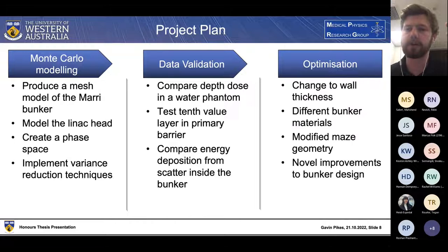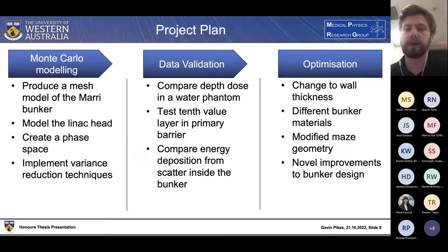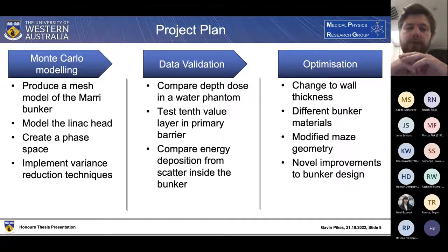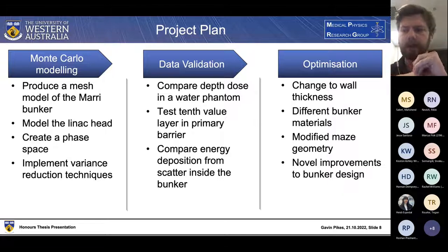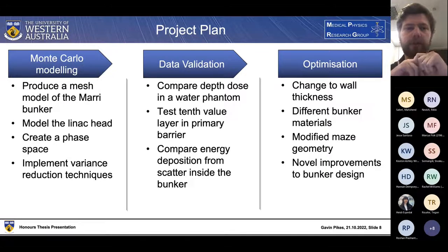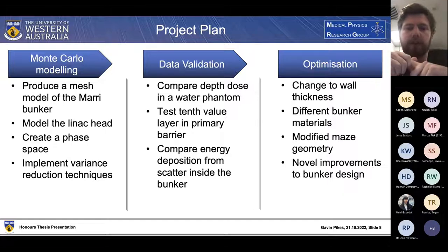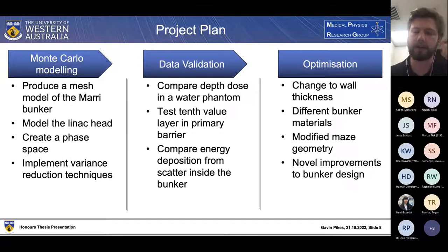The optimisation of the bunker is broken down into four main sections: changes to the wall thickness for both primary and secondary barrier walls; the use of different bunker materials, including higher and lower density shielding concretes; modification of the maze geometry, primarily the width and angles of the triple bend maze; and novel improvements, including the addition of extra shielding layers — a lead layer to the maze, a steel layer to the internal room, and a dual lead-concrete layer.